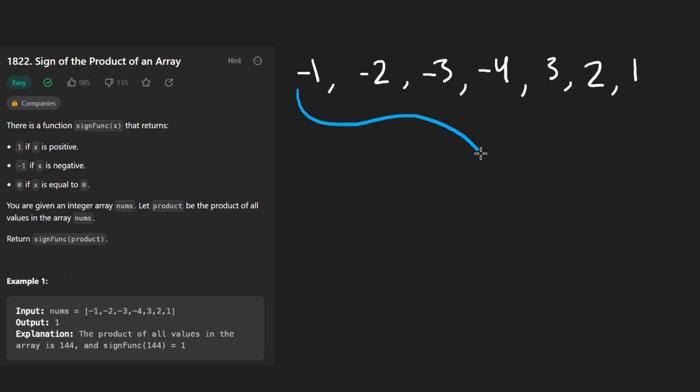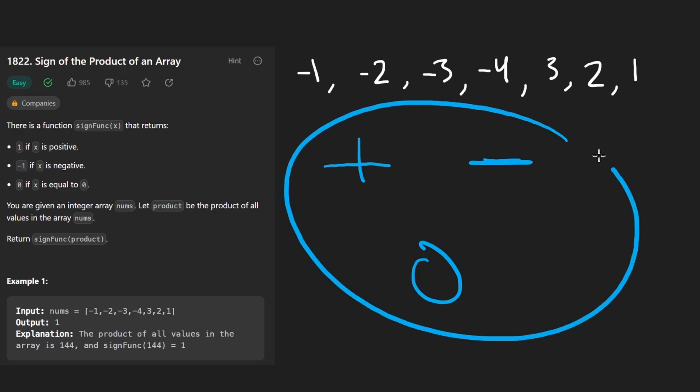Basically we're going to take the entire array, multiply each value together. That's what they define the product as being. So when you multiply all of these together, we're going to get some value by the end of it. It could be a really big value or a really small value. It doesn't really matter. What we care about is just, is this value a positive value or a negative value? Or maybe it's equal to zero. Those are the three cases. If it's positive, we return one. If it's negative, we return negative one. And if it's zero, we return zero.